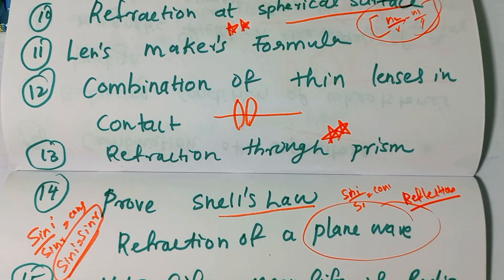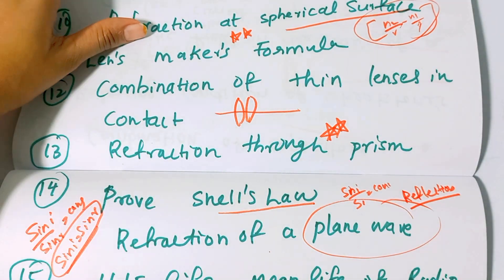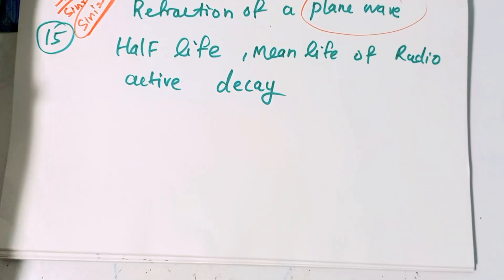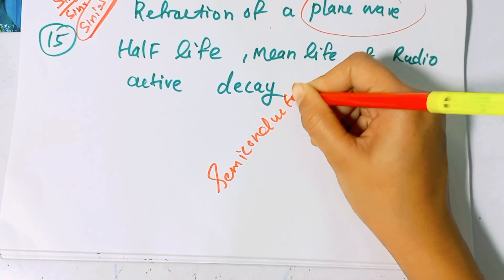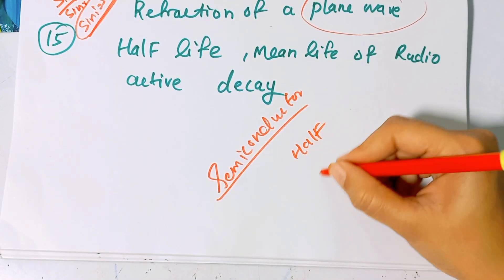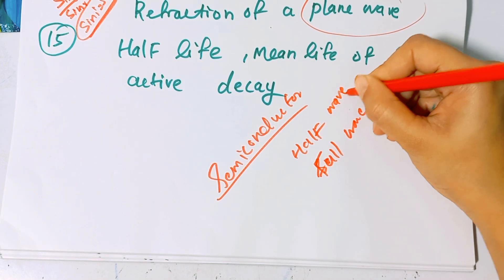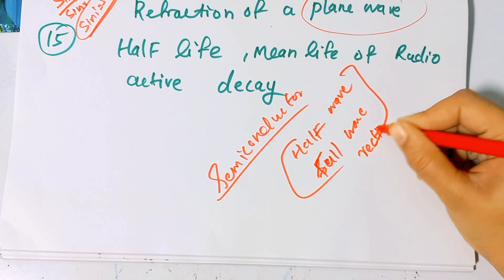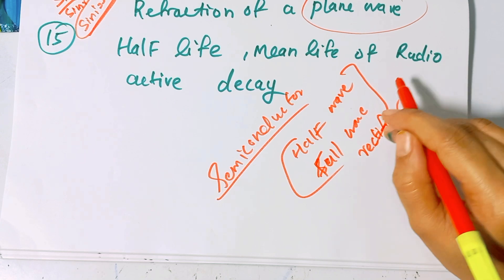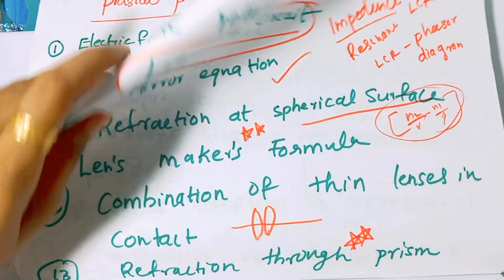All of these are included in the 15 derivations you need to learn. Additionally, there are extra topics like half wave rectifier and full wave rectifier with their circuits, working principles, and figures. These are the most important derivations in physics.